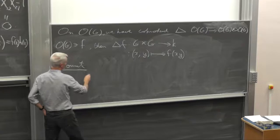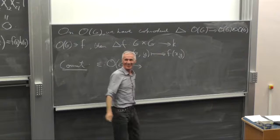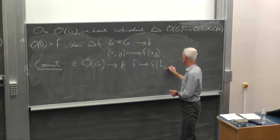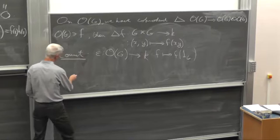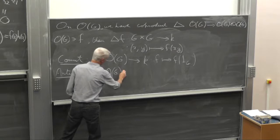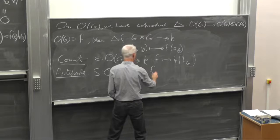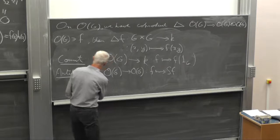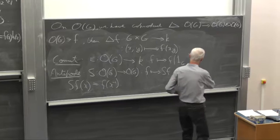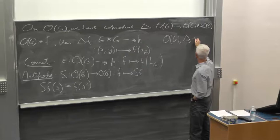First of all, how do you remember multiplication? Using a coproduct, which is a map from OG to OG tensor OG. The way it works is if we have F, one of our coordinate functions, we define a map delta of F from G times G to K. If you take X and Y, two elements in your group, then you evaluate F on the group product XY. You can see then that this gadget is a way of encoding the group structure within delta.